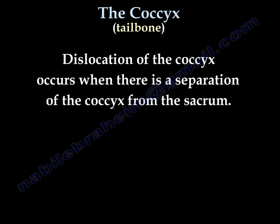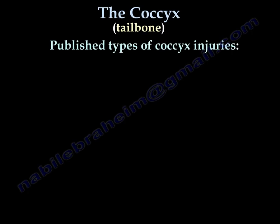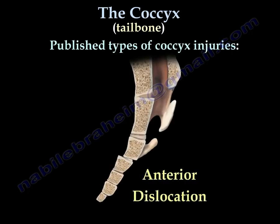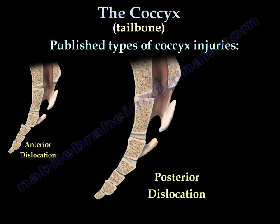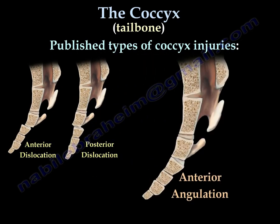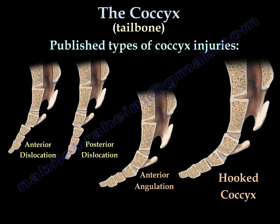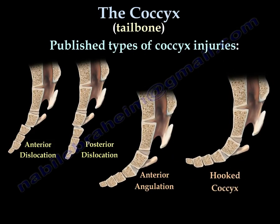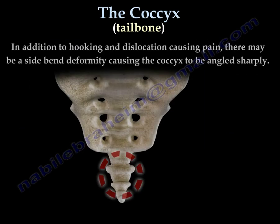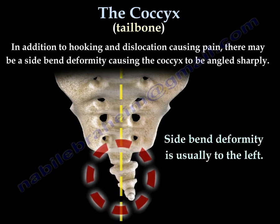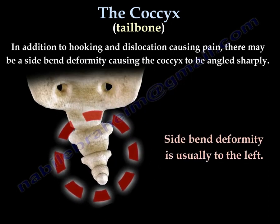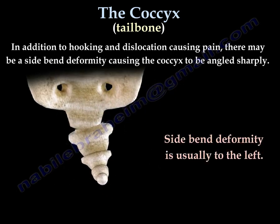Dislocation of the coccyx occurs when there is a separation of the coccyx from the sacrum. The published types of coccyx injuries include: anterior dislocation, posterior dislocation, anterior angulation, and hooked coccyx. A lot of people think the hooked coccyx is a significant cause of tailbone pain. The side-bend deformity of the coccyx is another type that causes coccyx pain.